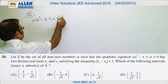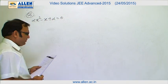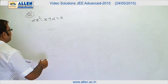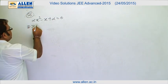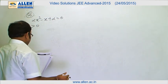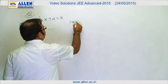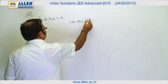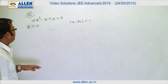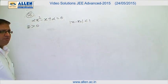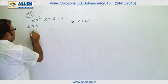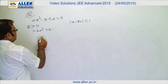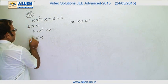In question 56, we are provided with a quadratic equation αx² - x + α = 0. Two conditions are given: first, the roots are distinct and real, making the discriminant greater than 0; second, the absolute difference between the roots is less than 1. From the discriminant condition, 1 - 4α² > 0, which gives α ∈ (-1/2, 1/2).